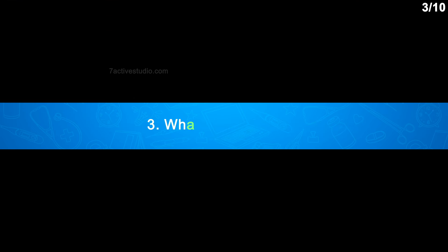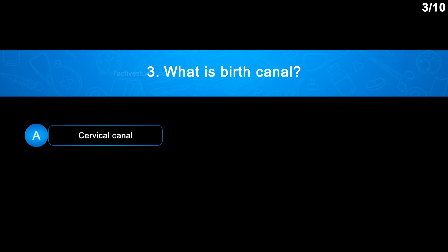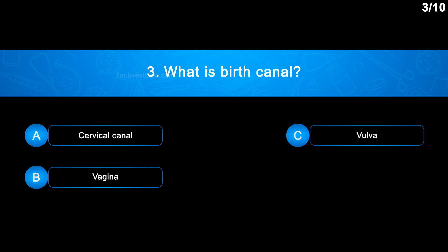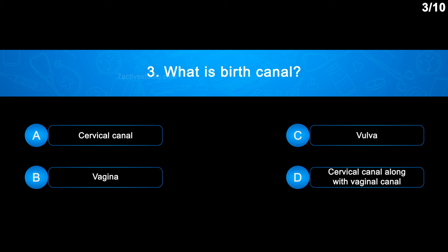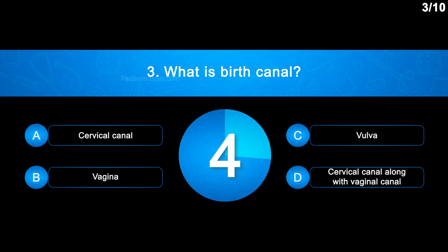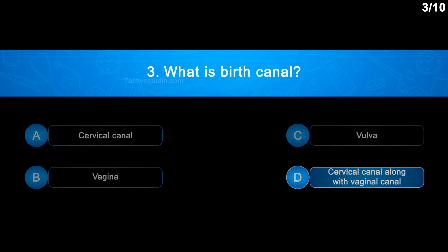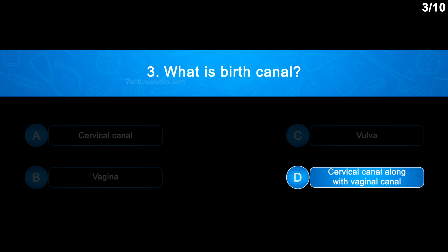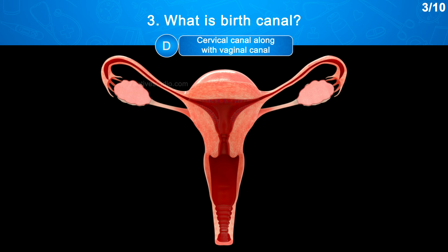Question No. 3: What is the birth canal? Option A: Cervical canal, Option B: Vagina, Option C: Vulva, Option D: Cervical canal along with vaginal canal. The correct answer is Option D. The cavity of the cervix is called the cervical canal, which along with the vagina forms the birth canal.